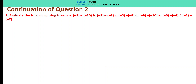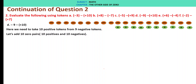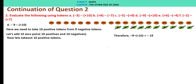D: minus 9 minus of plus 10. We have minus 9 tokens and need to take out 10 positive tokens from 9 negative tokens. So let us add 10 zero pairs — that is, 10 positives and 10 negatives. Now let us take out 10 positive tokens. We are left with minus 19. Therefore, minus 9 minus of plus 10 is minus 19.